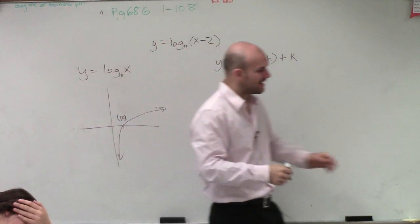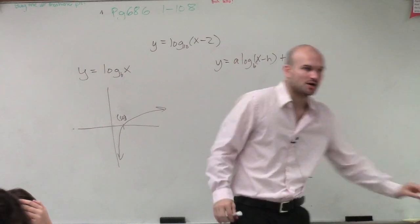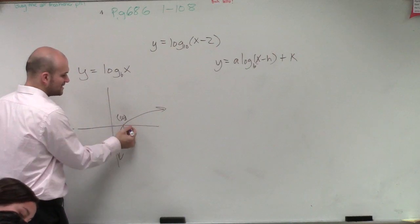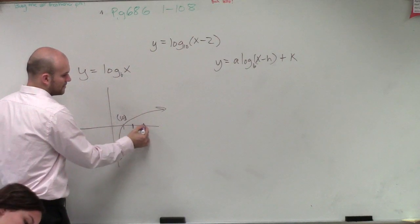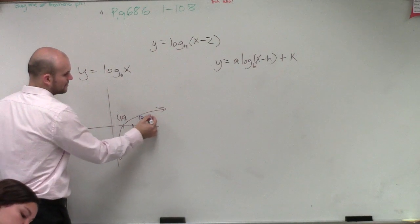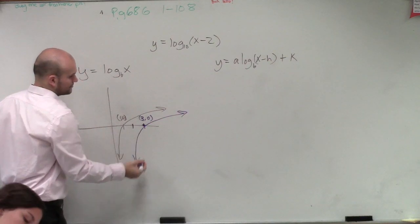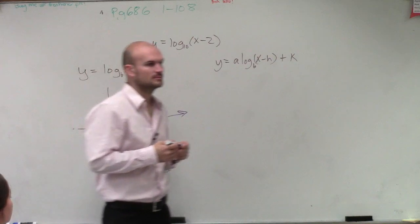Now, the only point that I know for certain that's on this logarithm is at the point 1 comma 0. So if I shift it two units to the right, it's now going to be at 3 comma 0. And there you go.